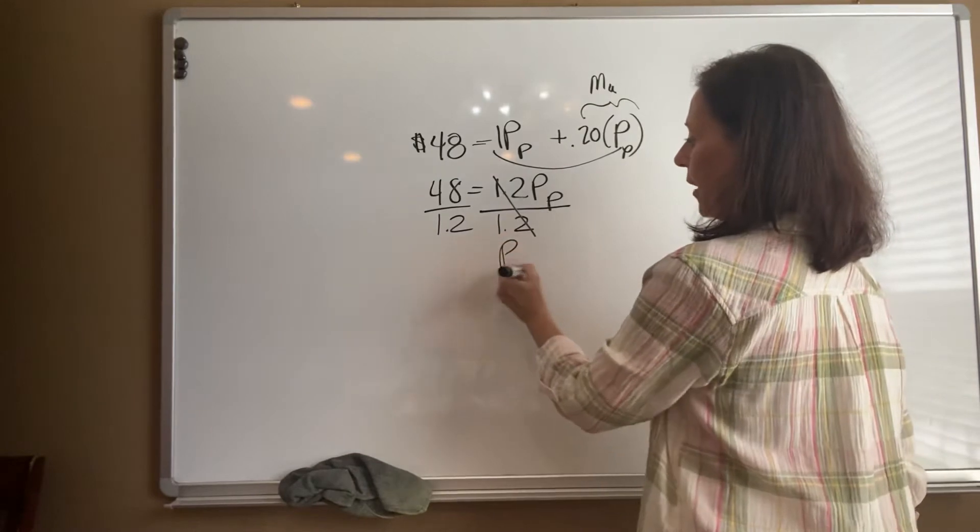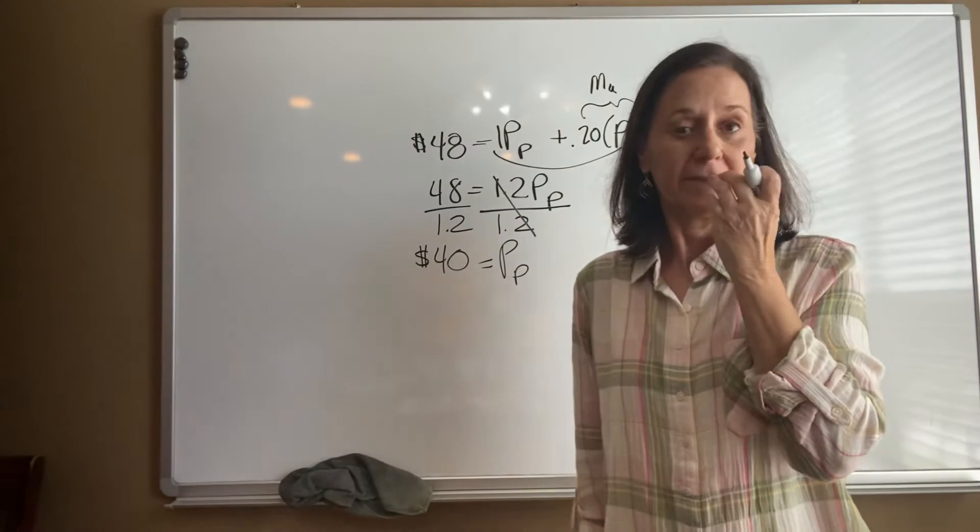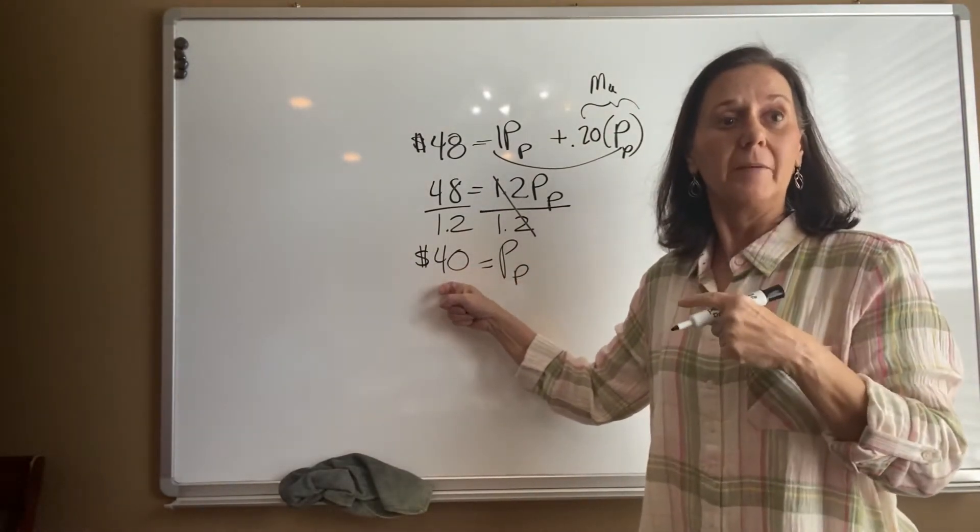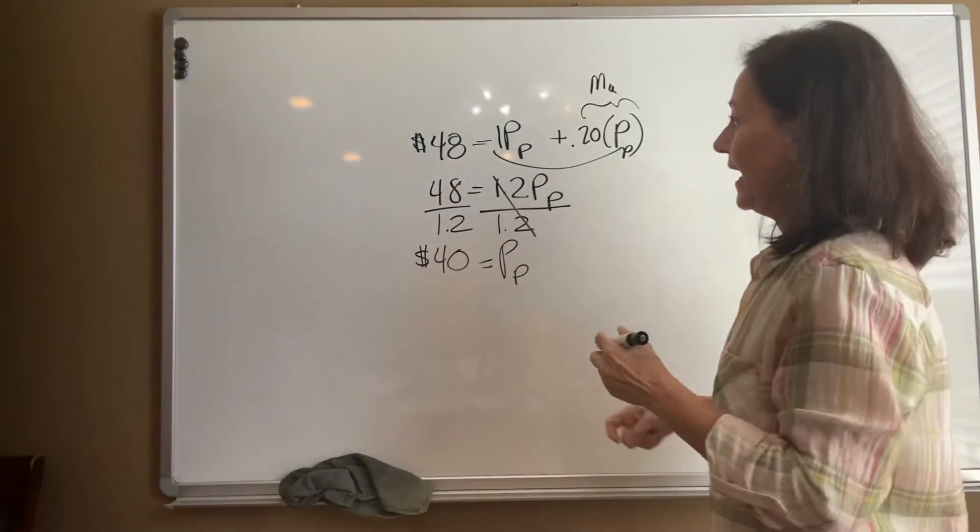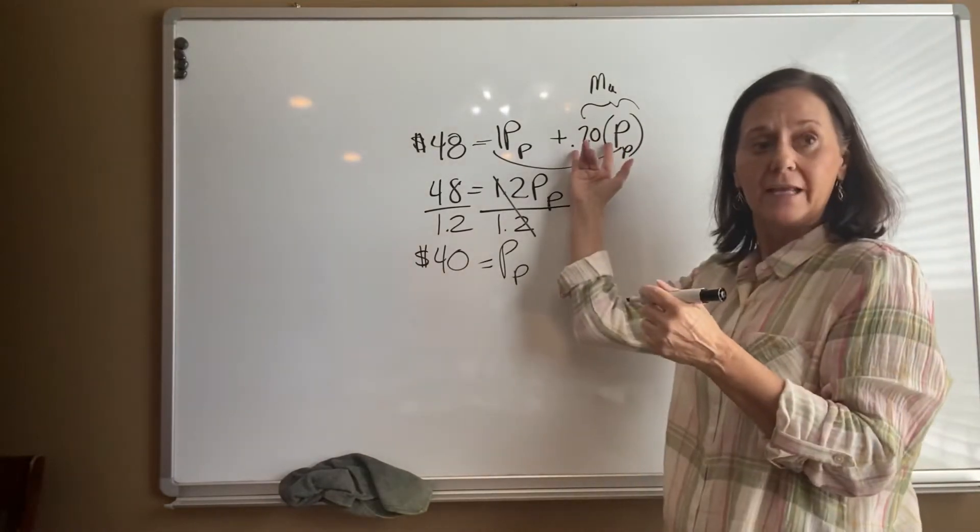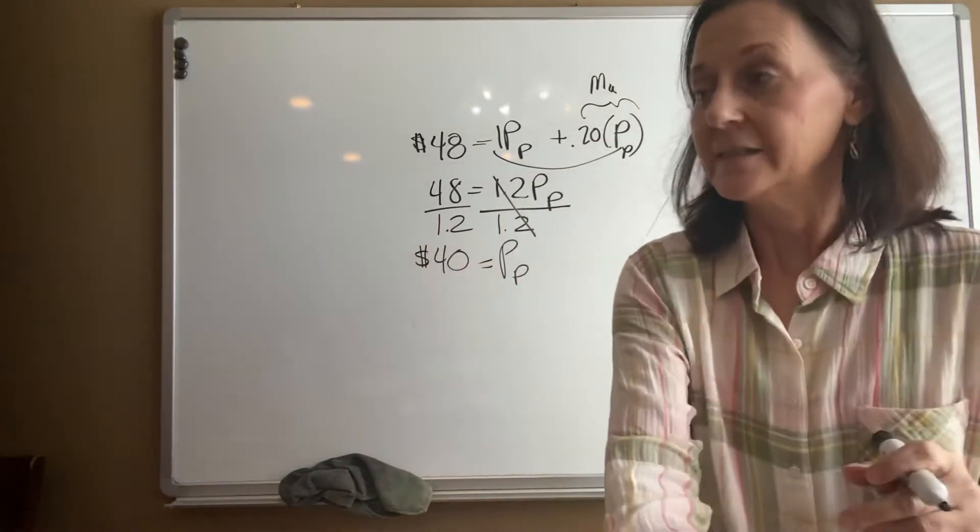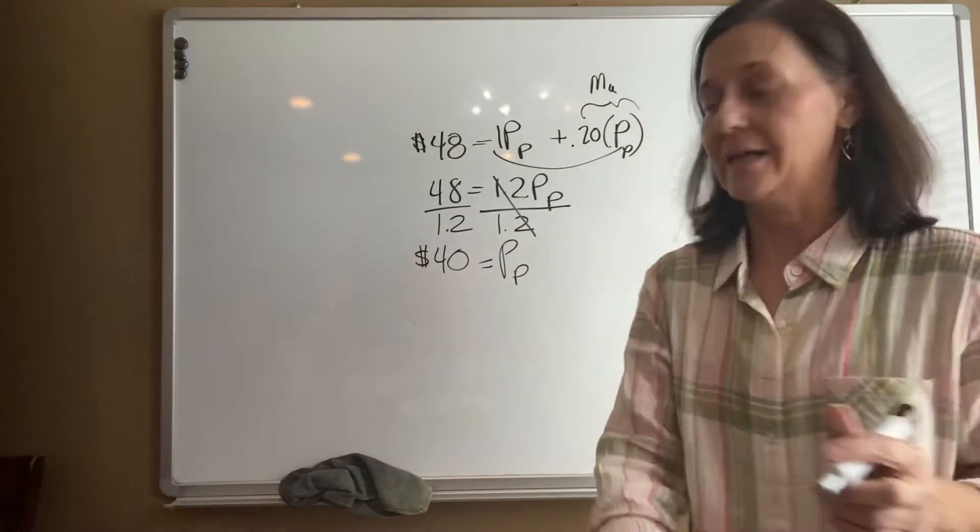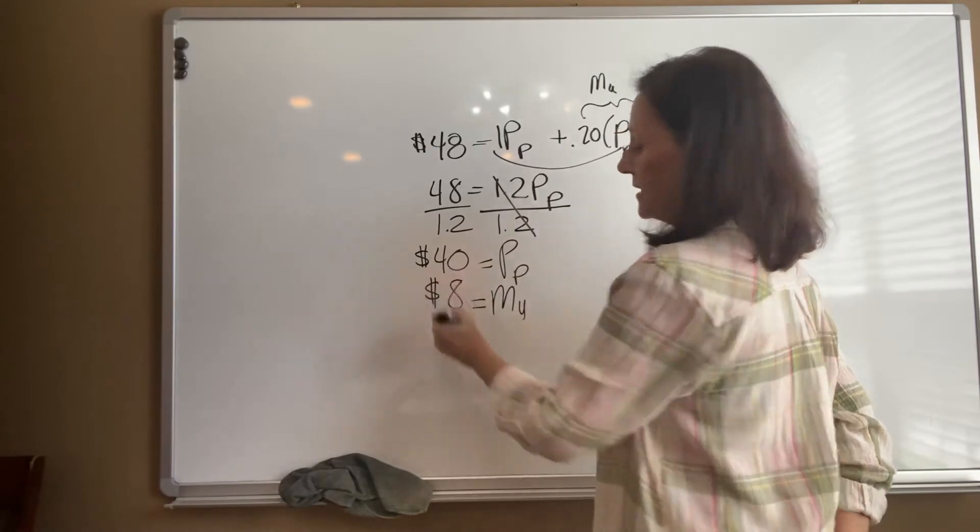48 divided by 1.2, my purchase price was $40. Well, if they purchased it for $40, how much did they mark it up if they sold it for $48? Has to be $8. Of course, I could make sure that the math works. Does in fact 20% of 40 equal $8? And it does. So that's my purchase price. They marked it up $8. That's how much they made on that one sell.